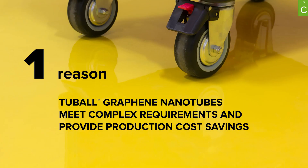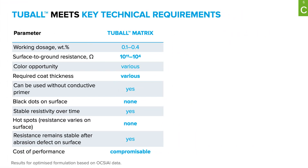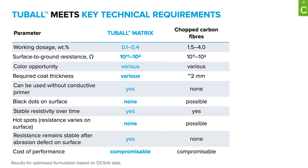Reason number one: tubal nanotubes meet complex flooring requirements and provide additional cost savings. Let's compare tubal graphene nanotubes with other common solutions available on the market. One of them is chopped carbon fiber, which is a very well-known conductive agent. However, due to the average length of chopped carbon fiber and the application technology, you can face drawbacks like a limitation of base coat thickness of roughly 2 millimeters.